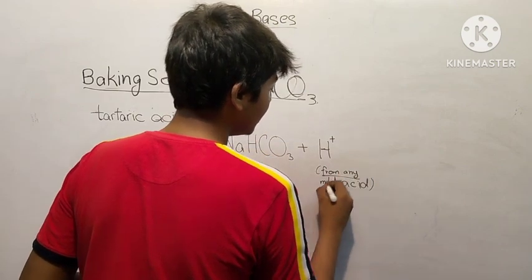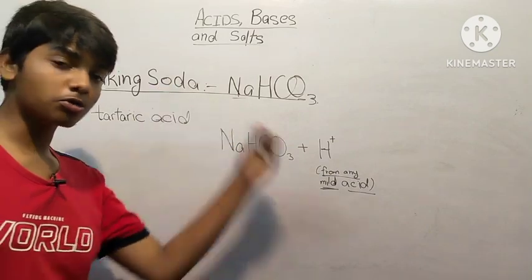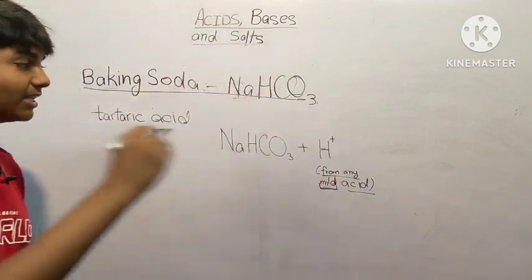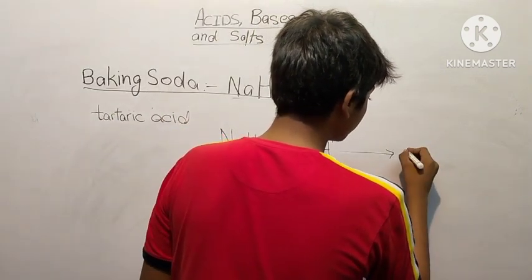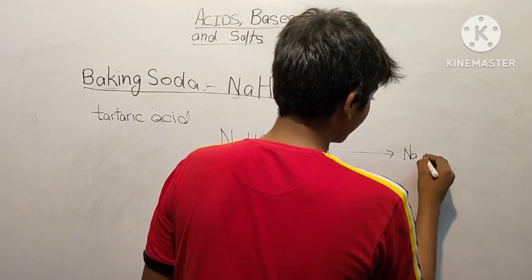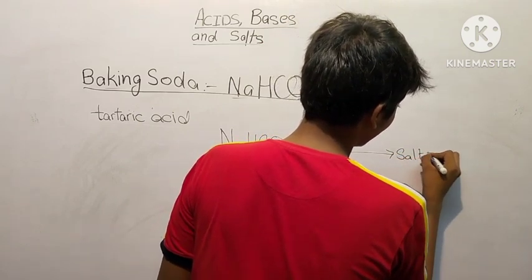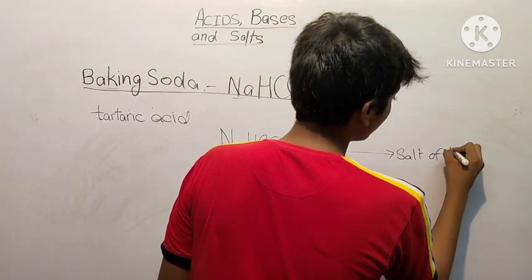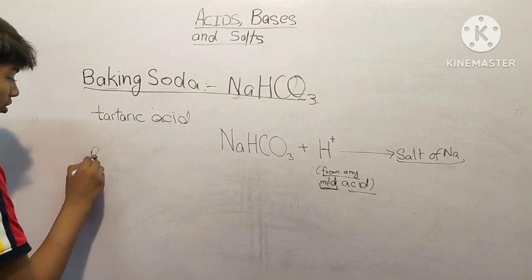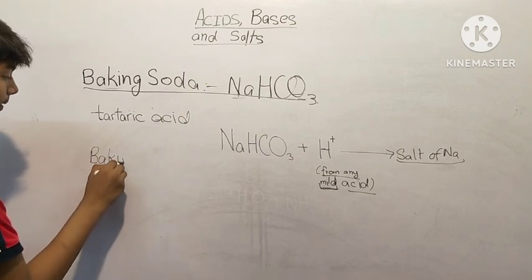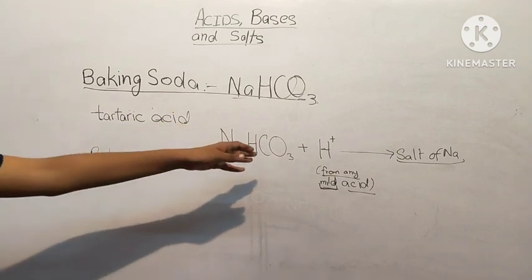We need a mild acid, not strong, not too less. This produces a salt of sodium. The salt of sodium is baking powder. This mixture is what we call baking powder.